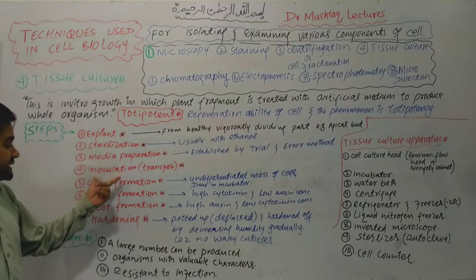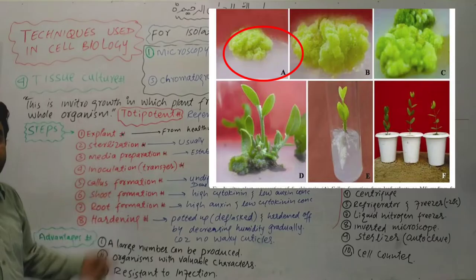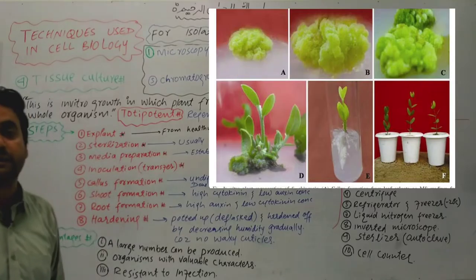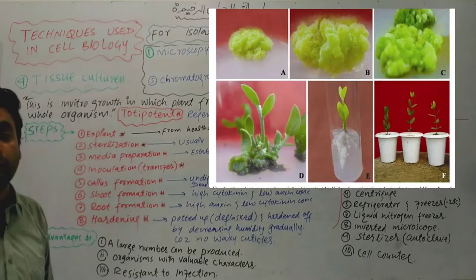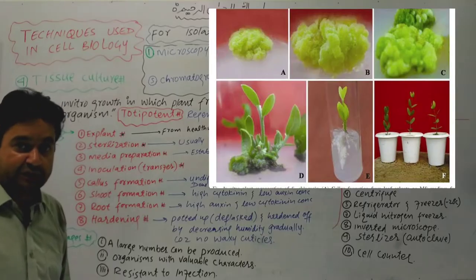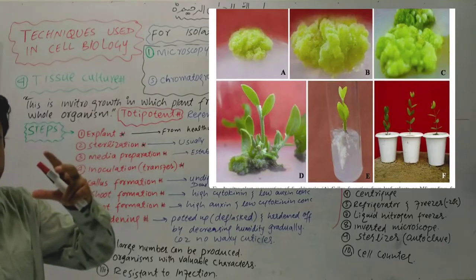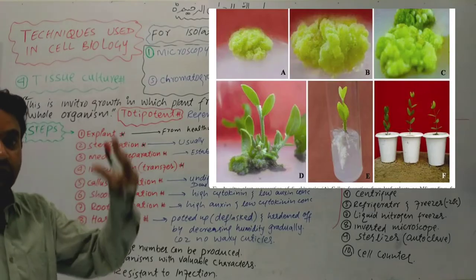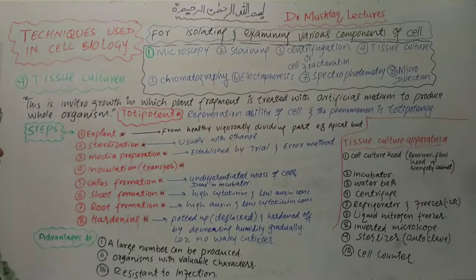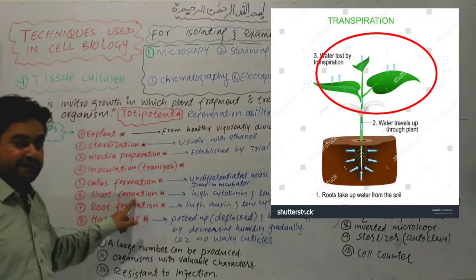A callus forms — an undifferentiated cell mass. From the callus, differentiation begins. Shoot formation occurs from the callus. This is called shoot formation, where the shoot, the skeletal part on the upper portion, begins to develop from the stem region.